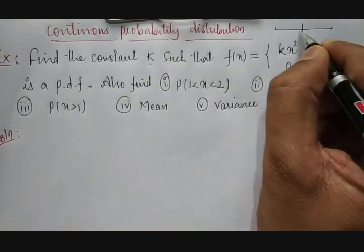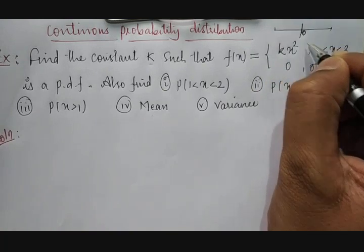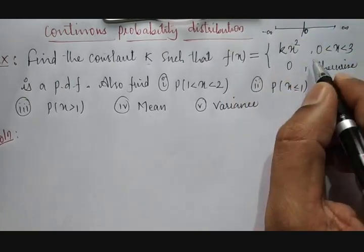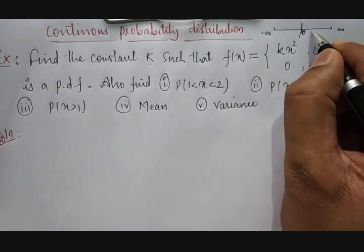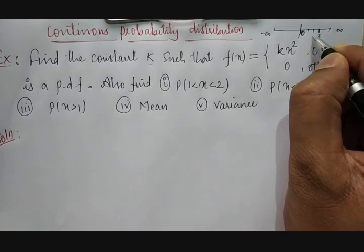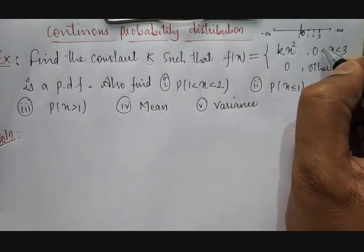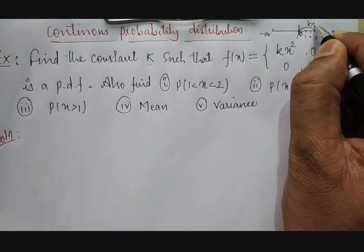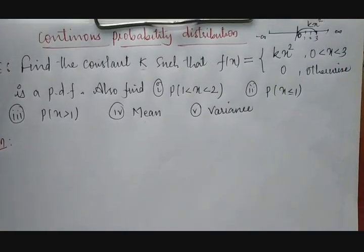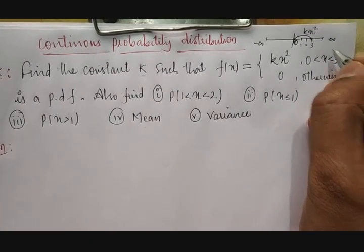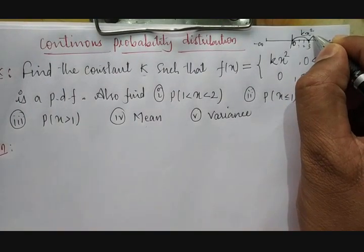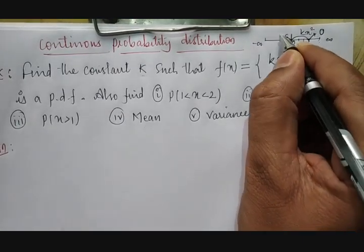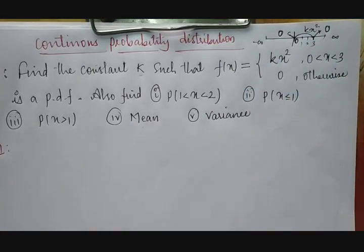Suppose we take this as the x-line and this as the y-line. x = 0 here; this side moves up to plus infinity and this side moves up to minus infinity. So if we mark 1, 2, 3 on the x-axis: if x lies between 0 to 3, the functional value is k·x². If x crosses the boundary of 3, or if it is less than 0, the functional value becomes 0. That is the meaning.